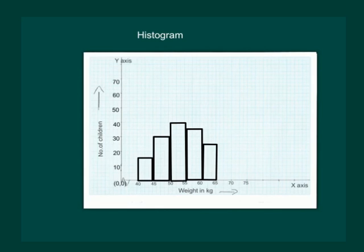Then we start plotting our graph for weight from 40 to 45 kg. Number of children is 15, so it comes somewhere here. We mark this line and then we draw the rectangle.